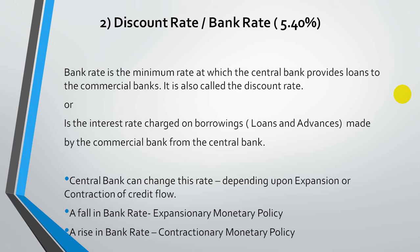Bank rate is referred to as the minimum rate at which the central bank will provide loans to commercial banks. It is also known as the discount rate — the rate at which the bank discounts lending activities, or the rate charged on borrowings that banks take from the central bank. Monetary policy is divided into two types: expansionary monetary policy and contractionary monetary policy.